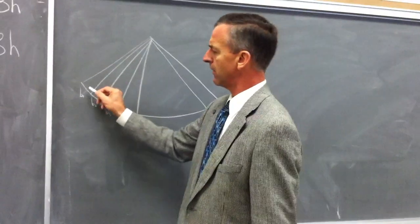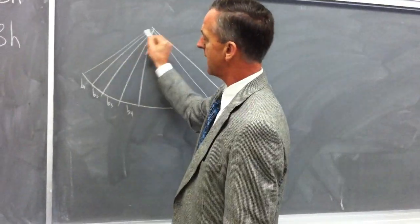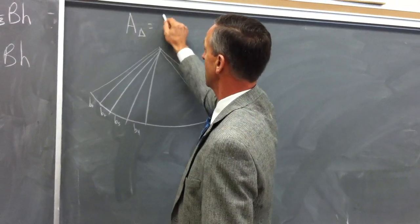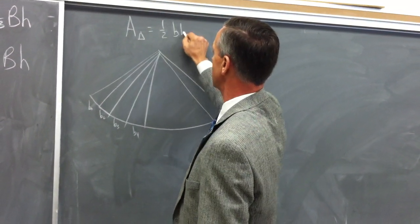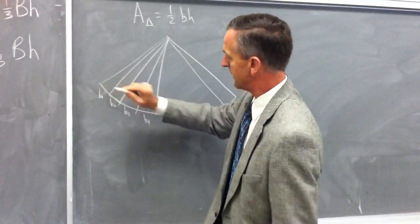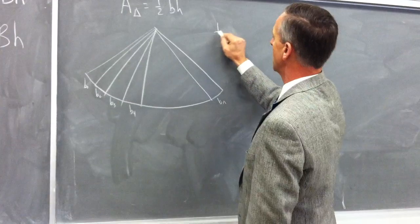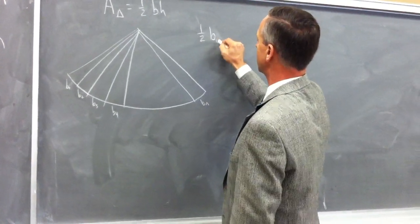We remember our area formula for a triangle is one half base times height. The base here is b1 so to find the area of this triangle we'll go one half b sub 1.